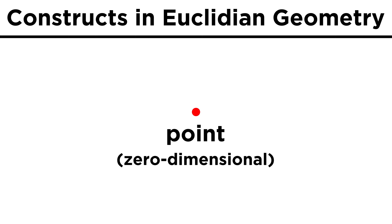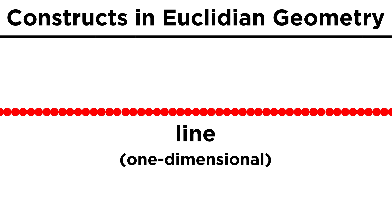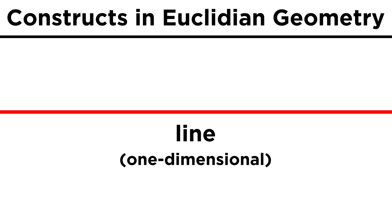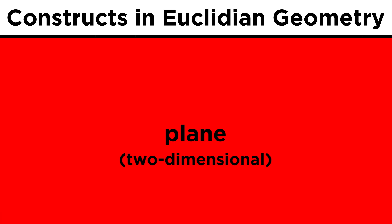From here, we can construct a one-dimensional object by stringing an infinite number of points along a particular dimension. This object is called a line. Points and lines are familiar to us from algebra, but now let's examine a two-dimensional object. This can be achieved by stringing an infinite number of lines along a dimension perpendicular to the line. This is called a plane.